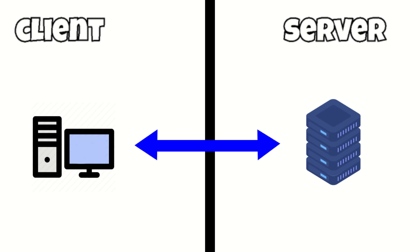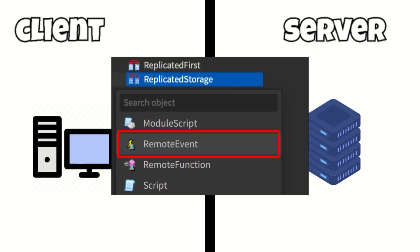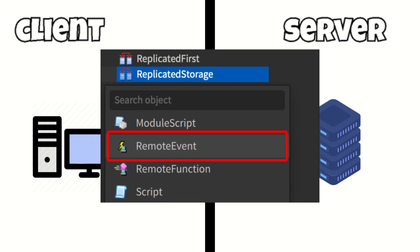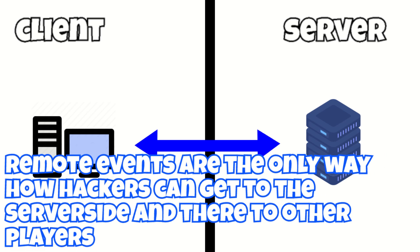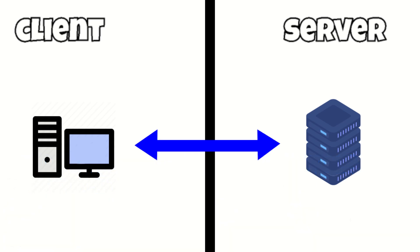Now that we know the difference between client and server, we can get to the important part. To communicate between server and client there are remote events. Most of them we can't see and are built in by Roblox, but some of them can be added by the game developer. This is also the vulnerability of the game — remote events are the only way exploiters can use to get on the server side and do things they shouldn't be able to do.